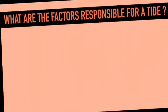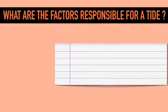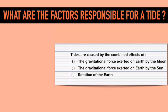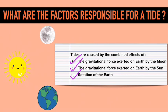Let's first recap some learnings from the previous video. In the previous video we discussed what are the factors responsible for a tide. Tides are caused by the combined effect of: first, the gravitational force exerted on earth by the moon; second, the gravitational force exerted on earth by the sun; and third, the rotation of earth.